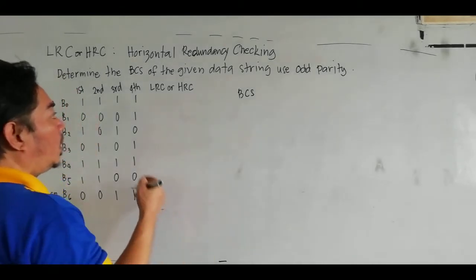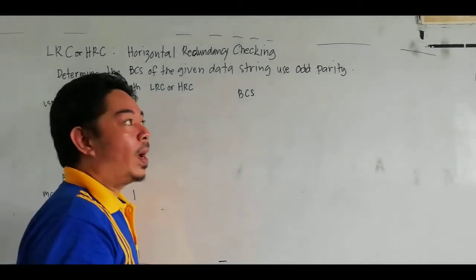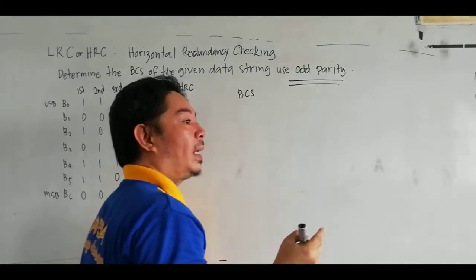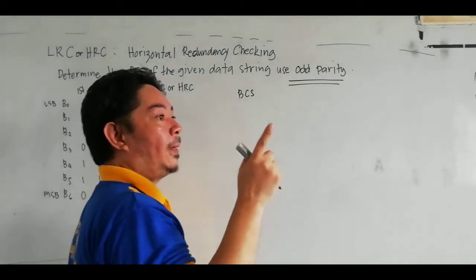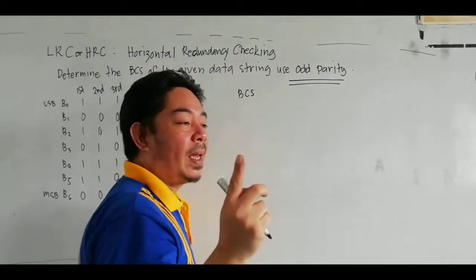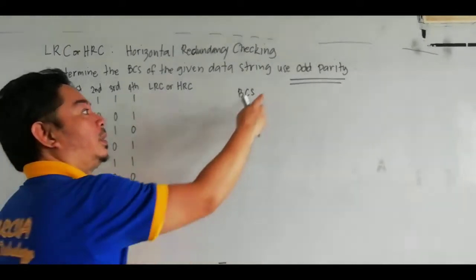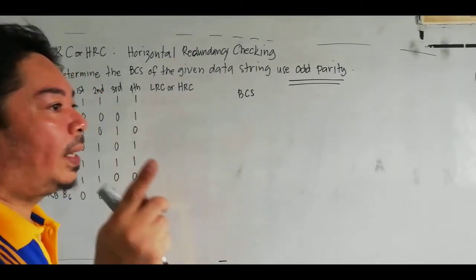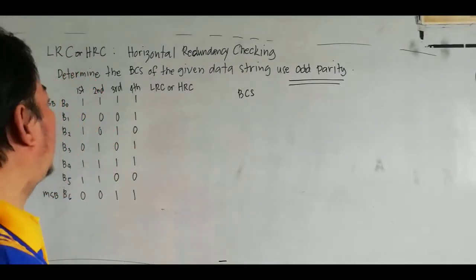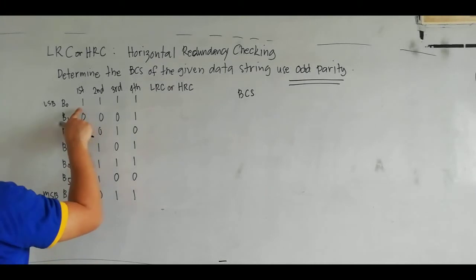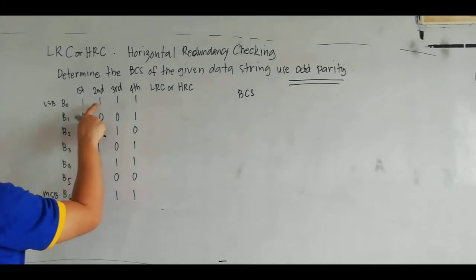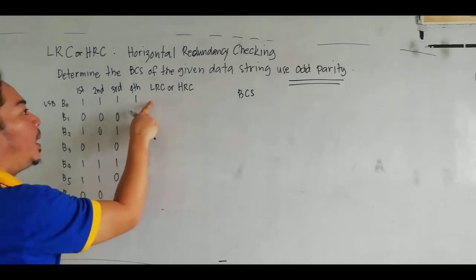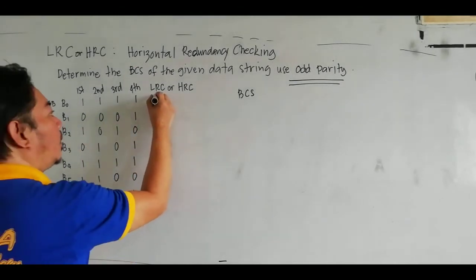For the LRC, we have to count the number of 1s. We use odd parity, so the number of 1s must be an odd number. Take note: using odd parity, the number of 1s must be an odd number. Counting the first data stream: 1, 2, 3, 4 — that is an even number, so the parity bit is 0.